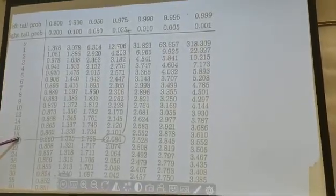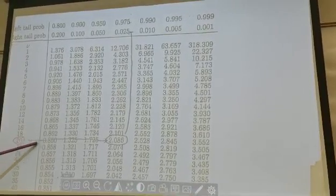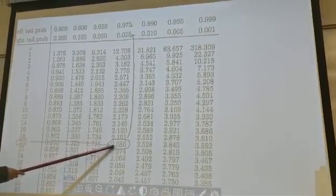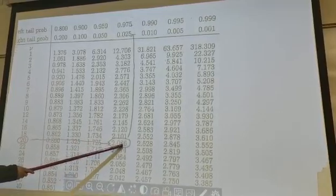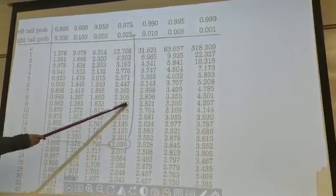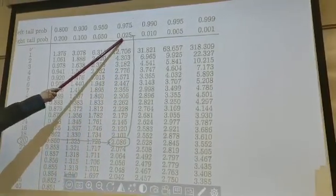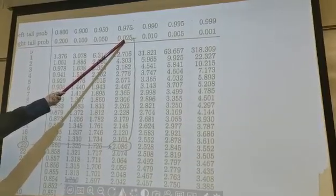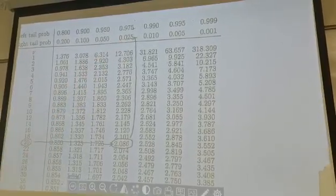And then you move horizontally, all the way up to 2.086. You stop here. Why you stop here? Because you move up, you find the upper tail is to the right. Right upper tail is 2.5%. And what does that mean?